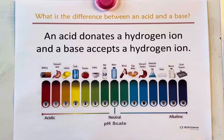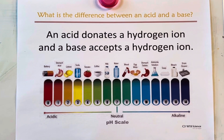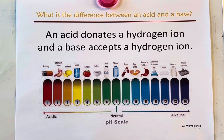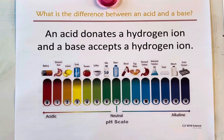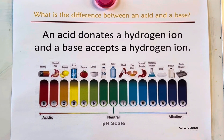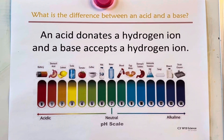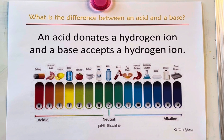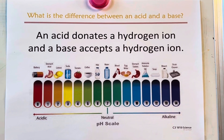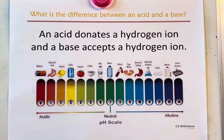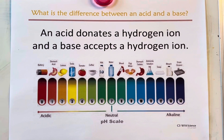What is the difference between an acid and a base? An acid donates a hydrogen ion, and a base accepts a hydrogen ion, a hydrogen ion.